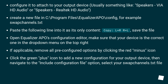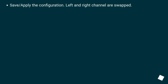Open Equalizer APO's configuration editor. Make sure your device is the correct one in the drop-down menu on the top right. If applicable, remove all pre-configured options by clicking the red minus icon. Click the green plus icon to add a new configuration for your output device, then navigate to the 'Include configuration file' option. Select your swap_channels.txt file. Save and apply the configuration. Left and right channels are now swapped.